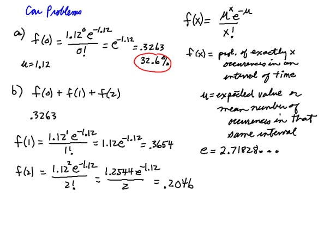To finish out here, I'm going to add 0.3263 + 0.3654 for f(1) + 0.2046 for f(2) to get 0.8963, which is approximately 90%. 90% is the answer to Part B.